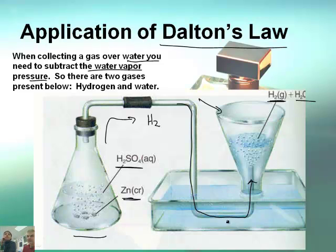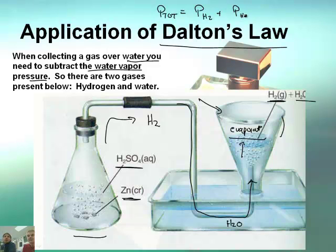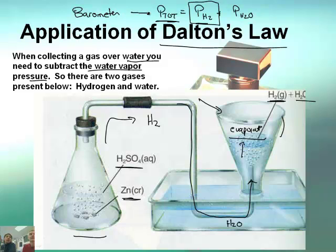Wait, where did the water come from? Since the gas is bubbling through the water, some of that water will evaporate — we're dealing with the vapor pressure of water, which we've talked about in the last unit. So the total pressure equals the pressure of the hydrogen gas plus the pressure of the water. When collecting gas, we're only concerned with the pressure of the gas we're generating. The total pressure can be read from a barometer, and we'll teach you how to equalize the tube so that the pressure inside equals the pressure outside.